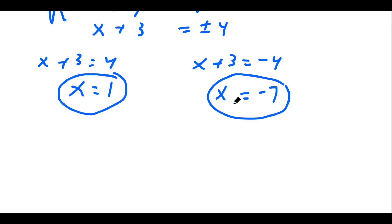So if we subtract 3 from both sides, we get x equals 1. And here if we subtract 3 from both sides, we get x equals negative 7. And those are our two solutions. Now that was an easy problem because we had a leading coefficient of 1. But how would you do a little bit more difficult problem?